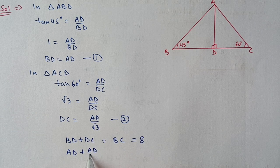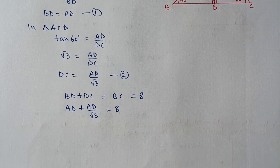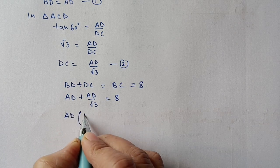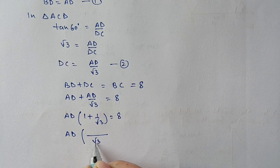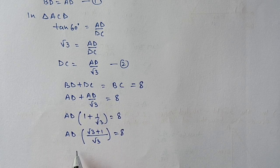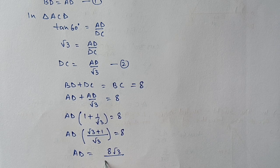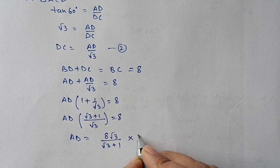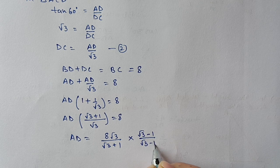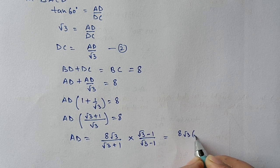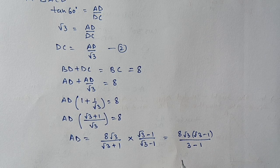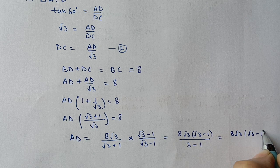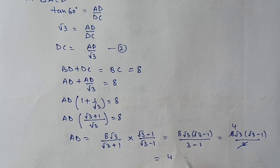Adding BD and DC gives BC = 8. Substituting: AD + AD/√3 = 8, so AD(1 + 1/√3) = 8. Taking LCM: AD(√3 + 1)/√3 = 8, giving AD = 8√3/(√3 + 1). Rationalizing by multiplying with (√3 − 1): numerator = 8√3(√3 − 1), denominator = 3 − 1 = 2. Simplifying: 4√3(√3 − 1) = 4(3 − √3) = 12 − 4√3 centimeters.